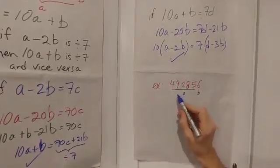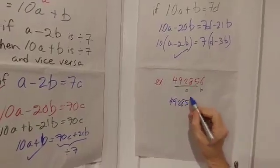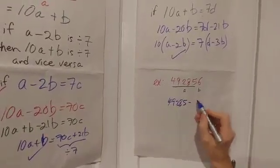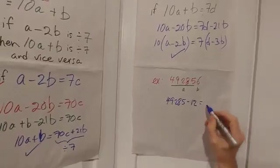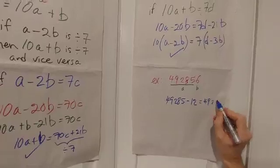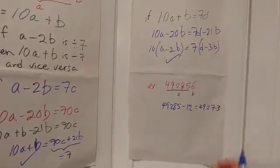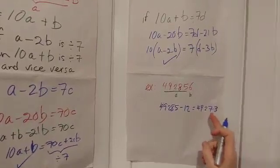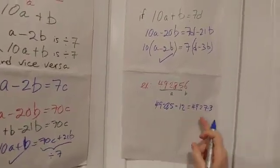So what I have to do is I have to subtract 49285, that's the A value, minus double the B value, which is 12. And that will give me 49273. But then you'll say, well, how do I know if that's divisible by seven? Well, you don't have to know. You can just repeat the process.